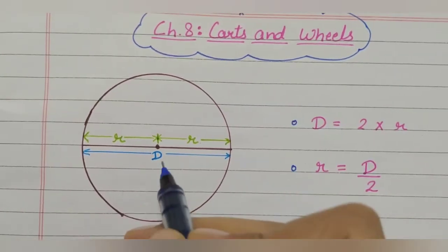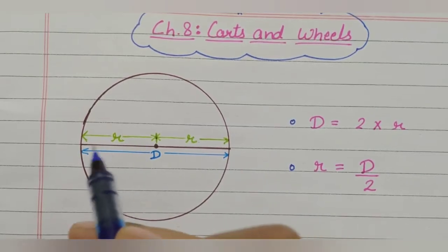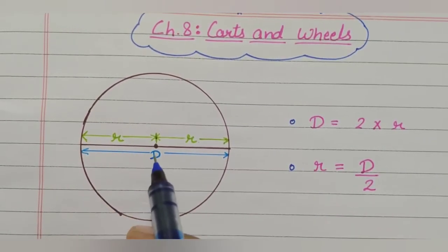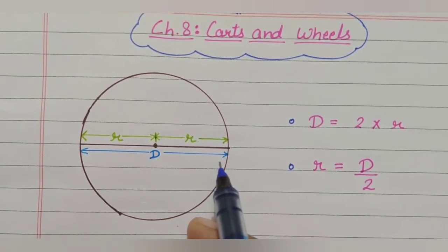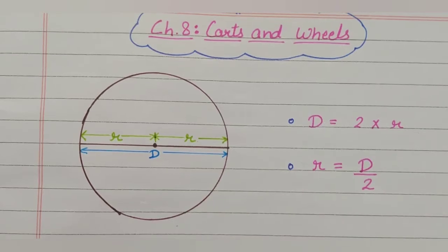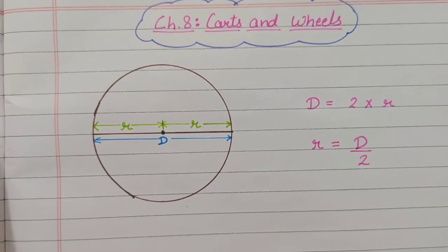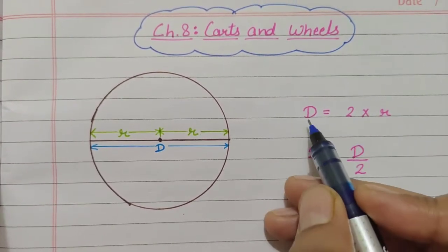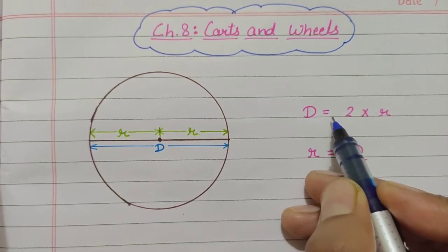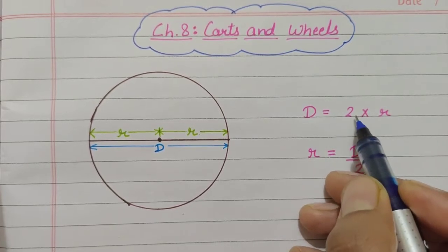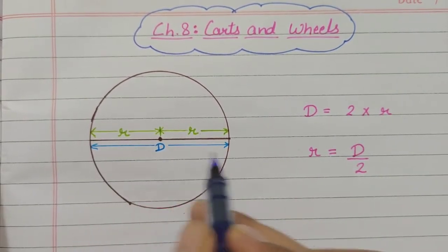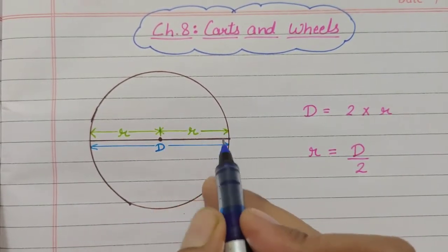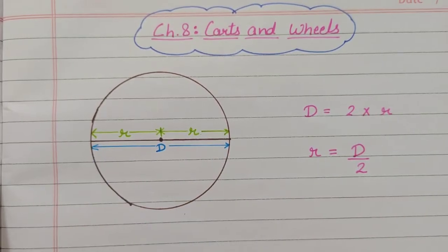Here in this circle, R represents radius and D represents diameter. So, we can write it in this form: the diameter is equal to two times of radius. Diameter is equal to two times of radius.